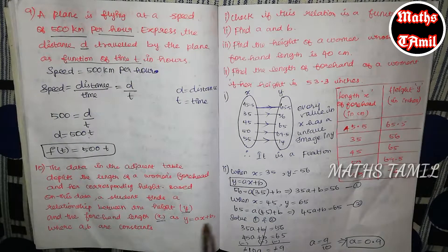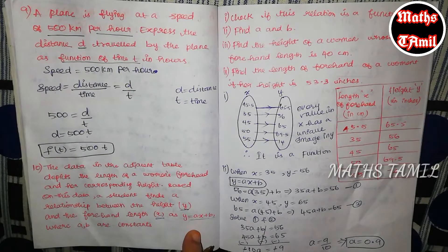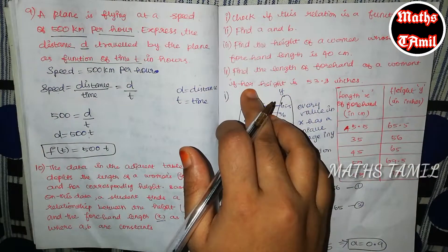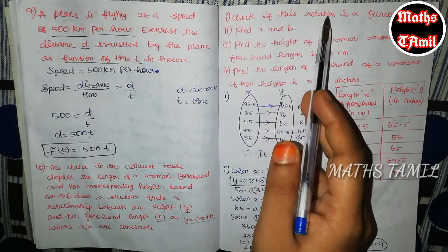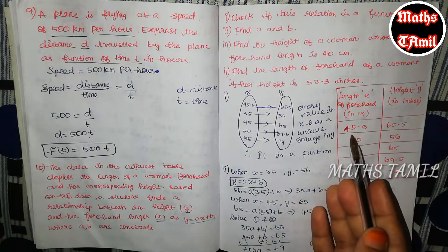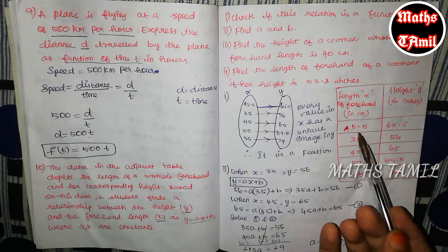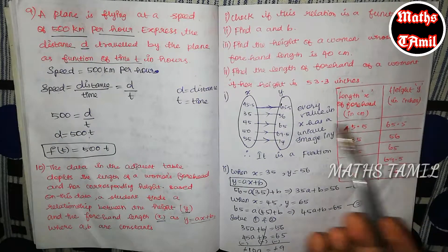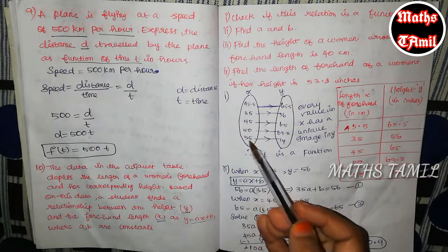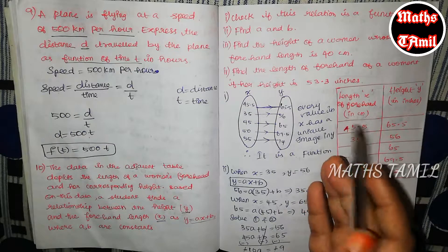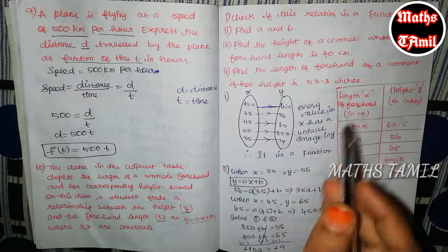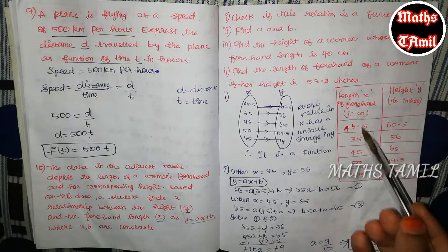Forehead length is x, and the relationship is y is equal to ax plus b, where a and b are constants. We can find four subdivisions here. First, check if this relation is a function. This is a function — we have one value, so we can find the equation in x and y.